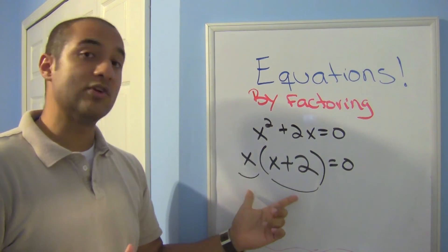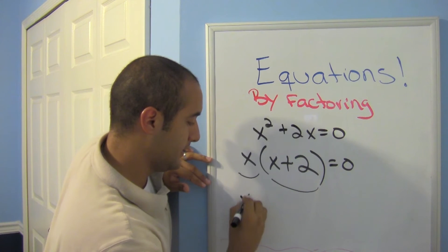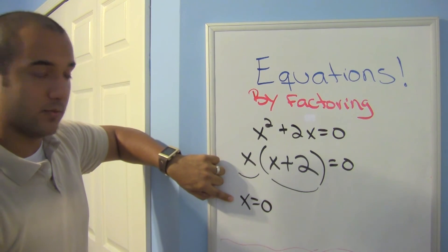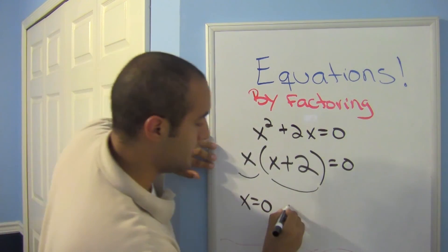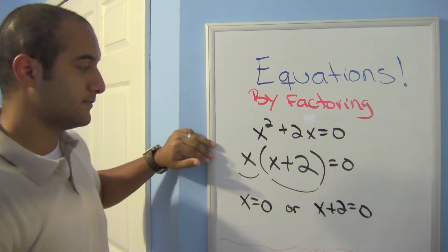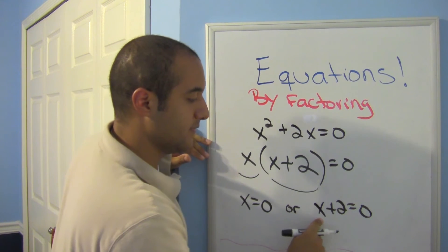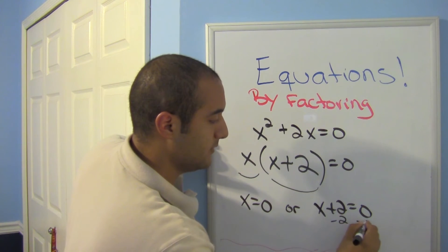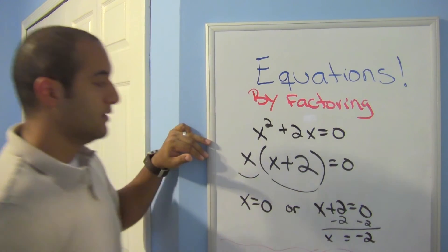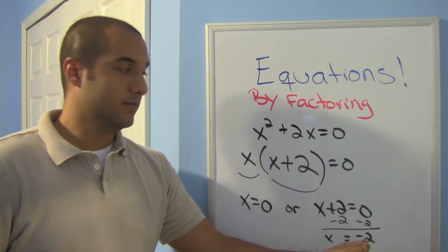We split into two possibilities. First possibility: x equals 0 — no more work needed there. Or, x plus 2 equals 0. Here we subtract 2 from both sides, bringing down x, giving x equals negative 2. So this equation has two answers: x equals 0 or x equals negative 2.